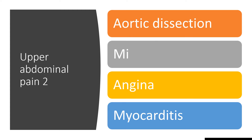It could be something dangerous like aortic dissection. It could be myocardial infarction, angina, or myocarditis. All those are found in the upper parts of the abdomen, so abdominal pain in the upper abdomen could be anything along those mentioned.